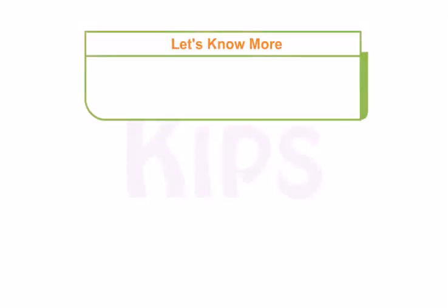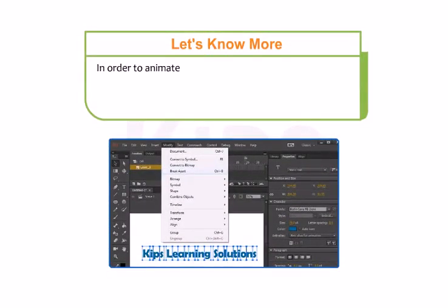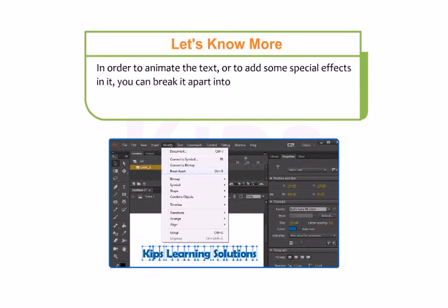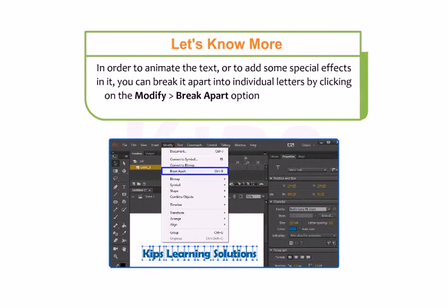In order to animate the text or to add some special effects to it, you can break it apart into individual letters by clicking on Modify then Break Apart, or pressing the Ctrl+B key combination.